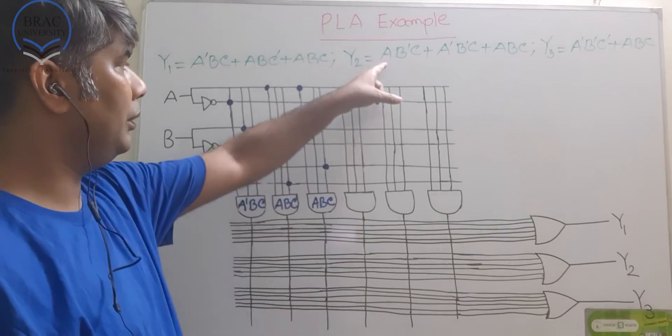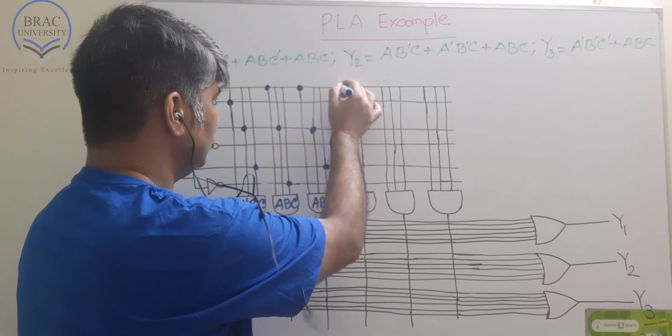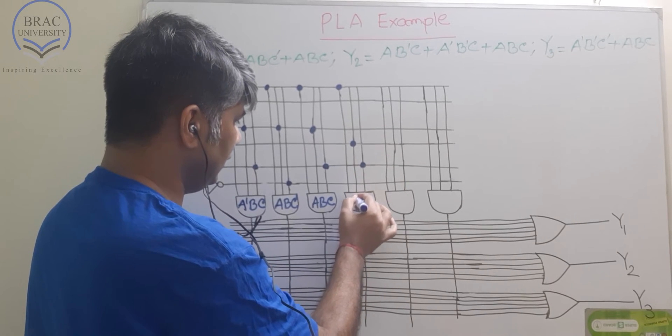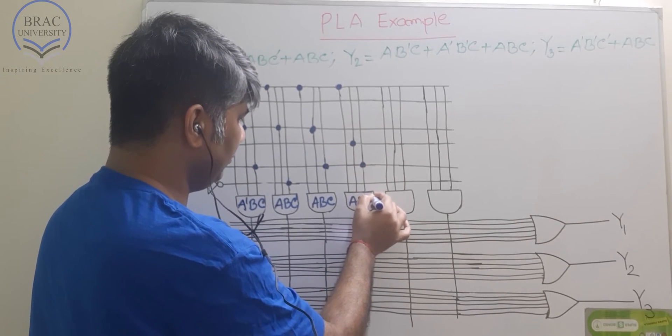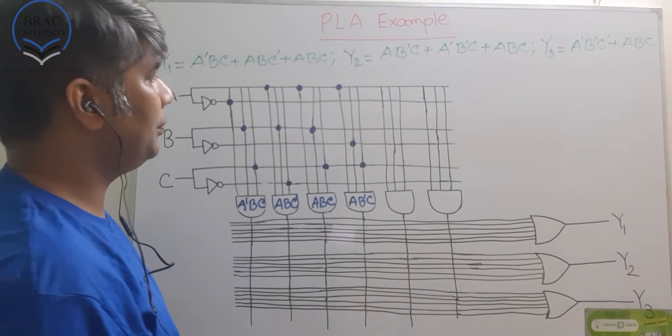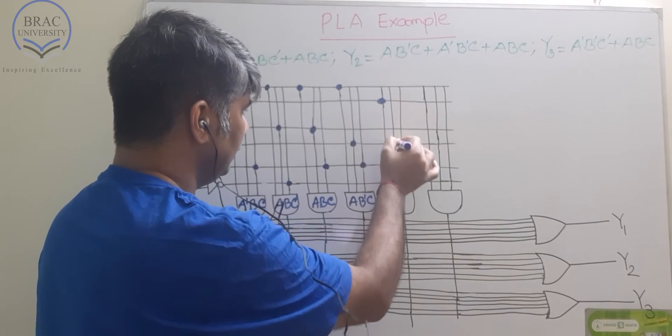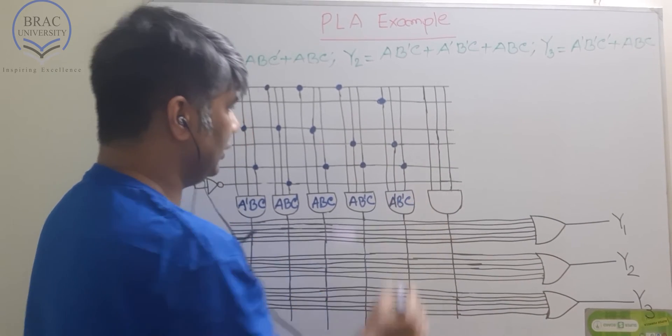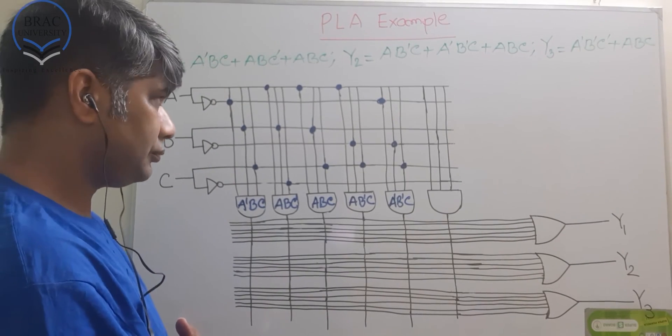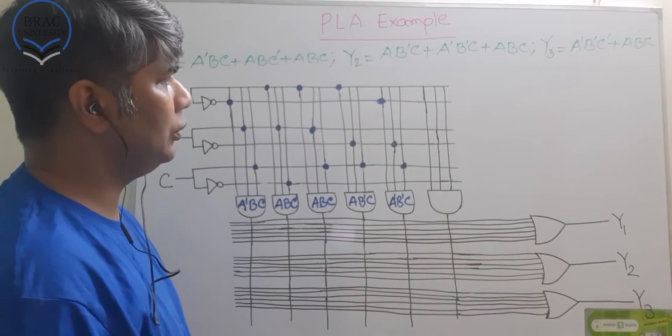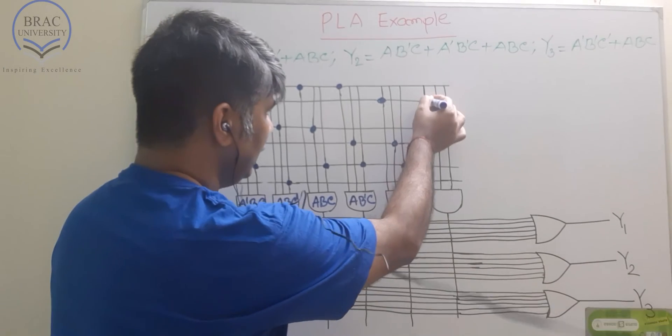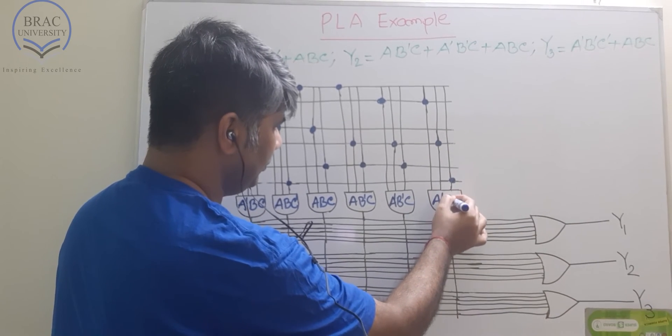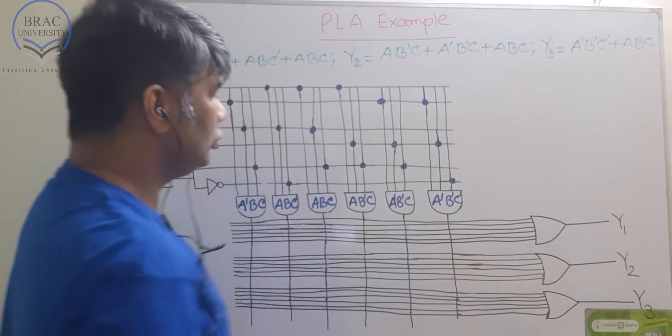Now, here we have another term, which is AB'C. A and then we have B' and we have C. This one will be AB' and C. We have all our AND terms ready.